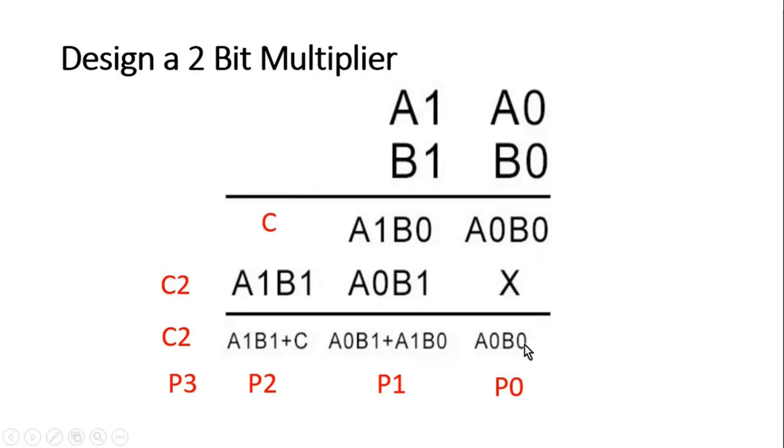So A0 B0, here we don't have any second number so it will come as it is: A0 B0. Then we add A1 B0 plus A0 B1, so that is my second term. Whatever carry will be generated from here will be forward to the next position, so this C will be added with A1 B1.